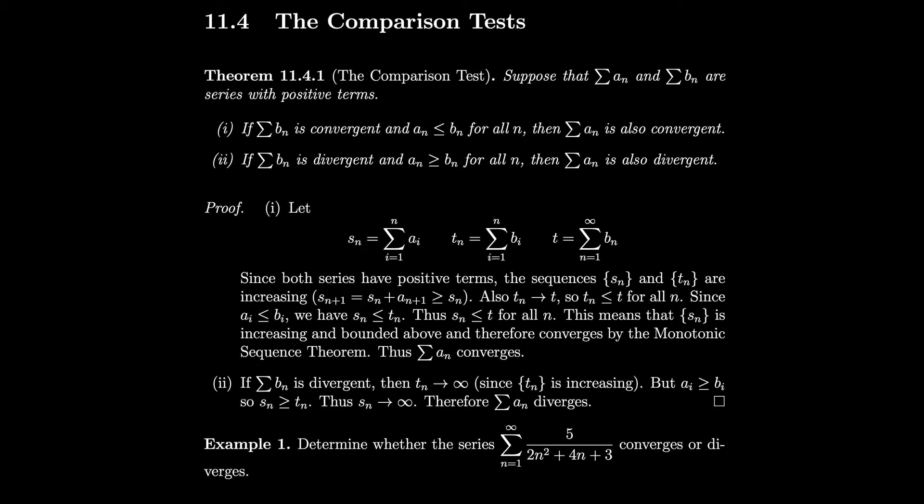We're basically saying if we have two series and one is smaller than the other, and the bigger one converges, the smaller one converges. And if the smaller one diverges, then the bigger one must also diverge, because it's even bigger than the divergent sequence.